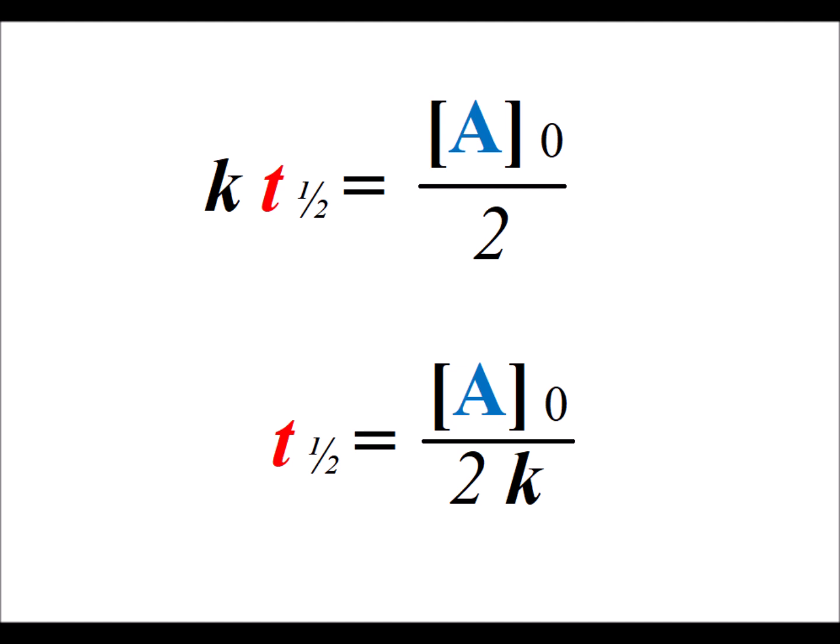Then we can simplify by dividing each side by 2, and then dividing each side by the rate constant k. And we get an expression for the half-life t₁/₂ equals the initial concentration [A]₀ divided by 2 times the 0th order rate constant k.